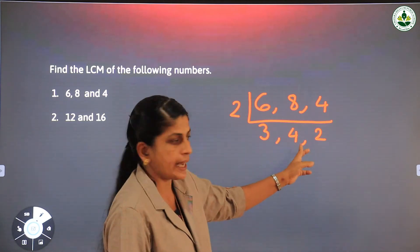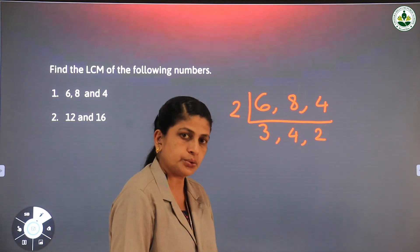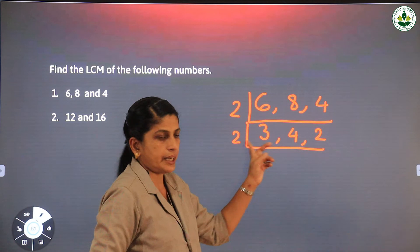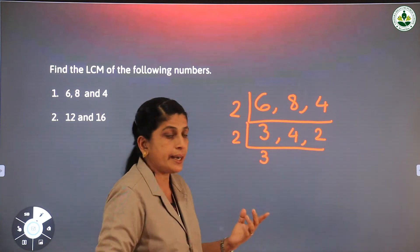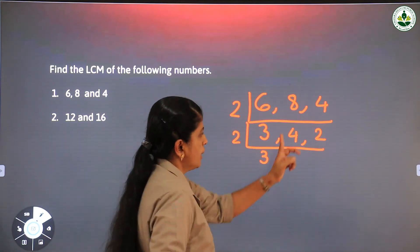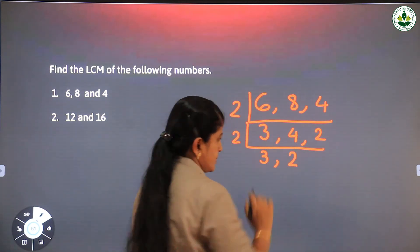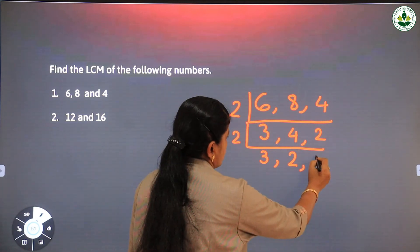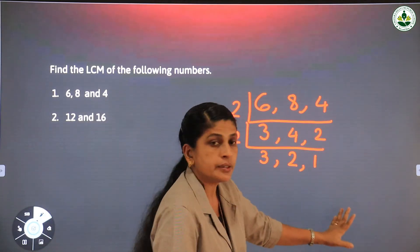Now we have 3, 4, and 2. There is no single divisor that can divide all three numbers. But 4 and 2 can be divided by 2. Write 2 as the divisor. We cannot divide 3 by 2 since 3 is odd, so write 3 as it is. Divide 4 by 2 to get 2, and divide 2 by 2 to get 1. Continue this process until we get 1, 1, 1 at the bottom.